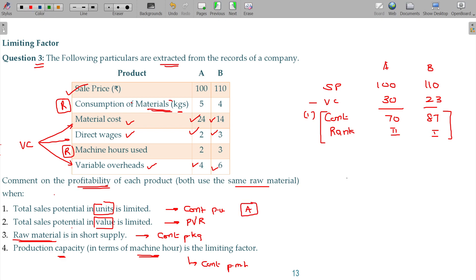When sales potential in value is limited, I have to find out the PVR, which is nothing but C by S times 100. First case is 70%, second case is 79%. Between these two, B will be the topper and A will be the second topper, similar to the earlier situation. So my recommendation goes to B. In this case, we will go for B.